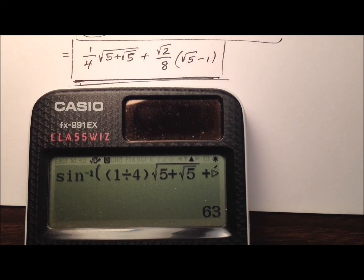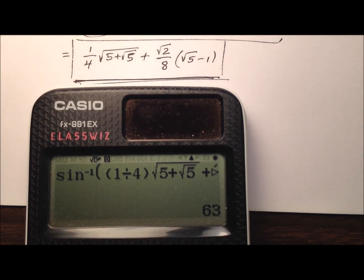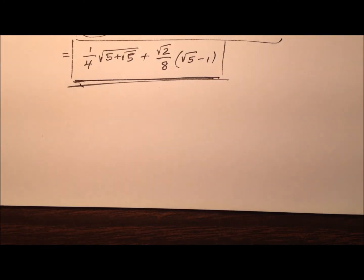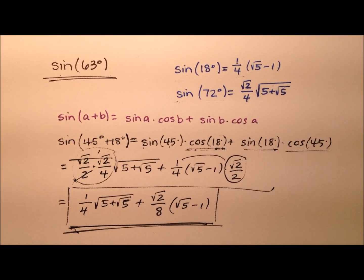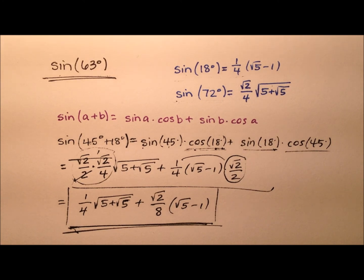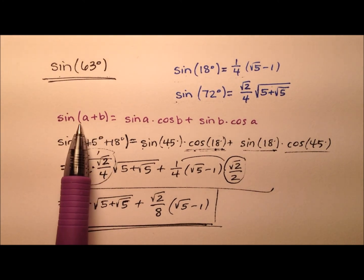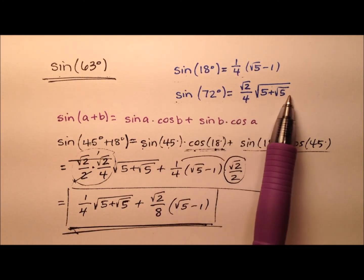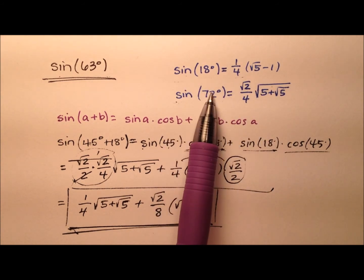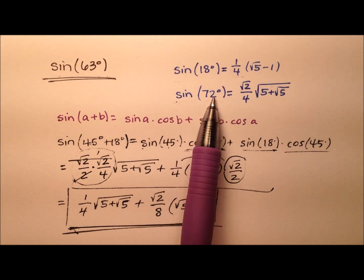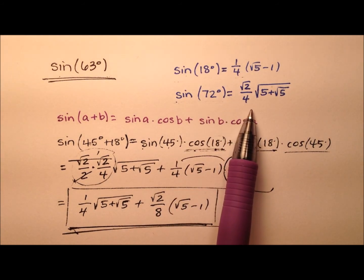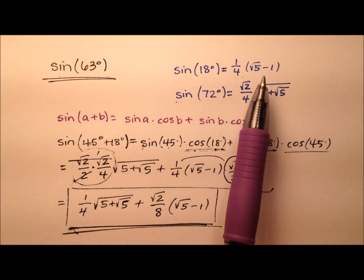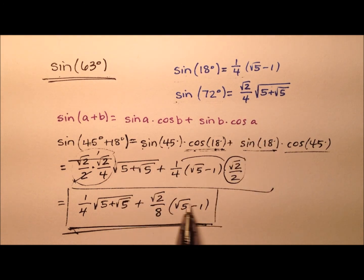So we have the exact value for the sine of 63 degrees, obtained by using the sum identity for sine, along with the values for sine of 18 and sine of 72, which were found in previous videos from scratch and included here.